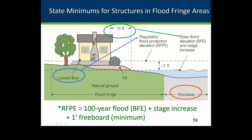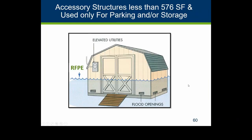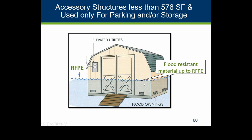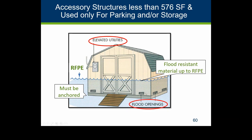Meeting minimum elevation when elevating on fill is required. For small accessory structures — 576 square feet or less, basically a 24-by-24 building — as a permitted use they don't have to be elevated on fill. Instead they can use flood-resistant materials up to the RFPE, utilities must be above that elevation, controls and outlets must be elevated, and the structure must be anchored so it doesn't float downstream. They're also required to have automatic flood openings on at least two sides — automatic, meaning they can't rely on someone going to open them.